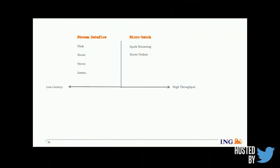Different streaming systems use these two approaches: Flink, Storm, Heron, and Samza follow the stream data flow approach, whereas Spark Streaming and the Storm Trident extension offer micro-batching. One benefit of micro-batching seen in recent years is better processing guarantees — Spark Streaming has supported exactly-once for a long time. Due to recent advancements, Flink now also supports exactly-once semantics.